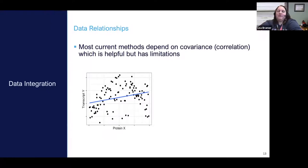Some things I want to mention about these methods: most current methods that focus on data integration depend on covariance, which is synonymous with correlation. That can be helpful but has limitations. Correlation is how closely two things are linearly related to one another. If you look at this plot of a protein against a transcript, there is a nonlinear relationship. If you calculate a correlation, it comes back as 0.26. There clearly is some relationship here, but a simple correlation is likely not going to pick this out.